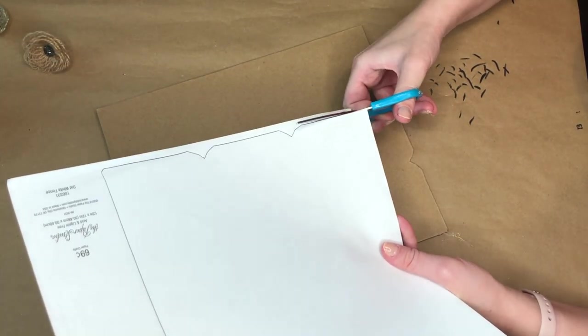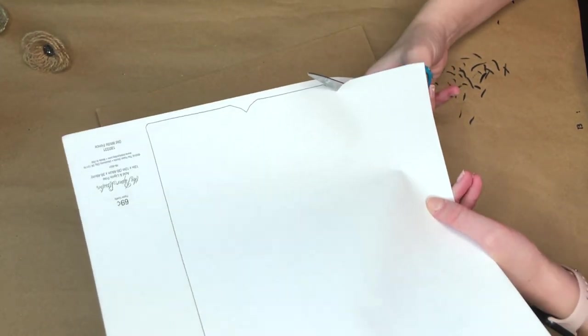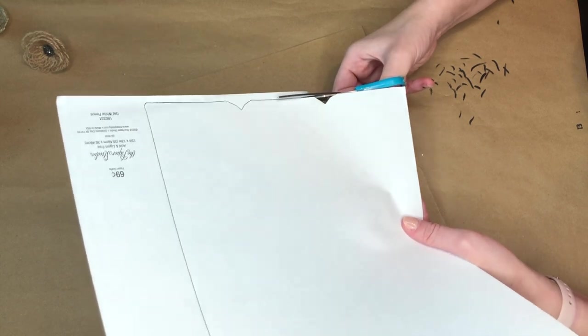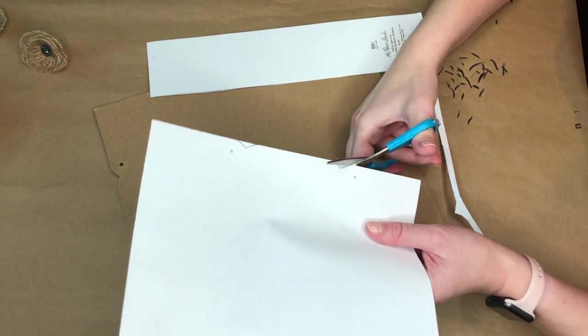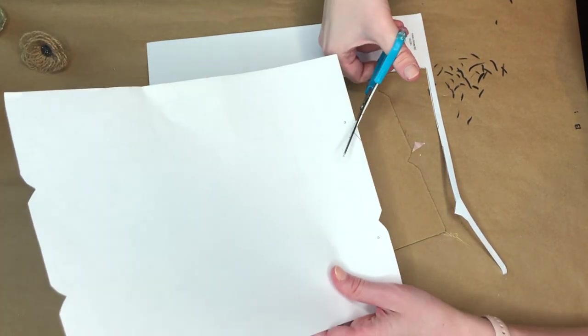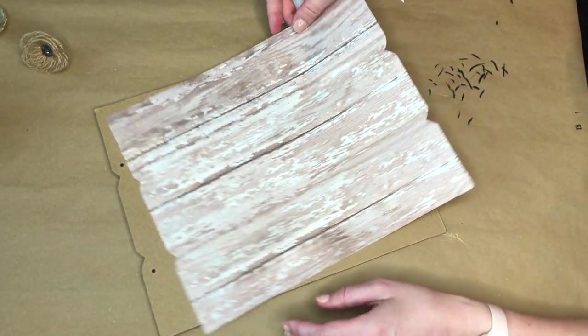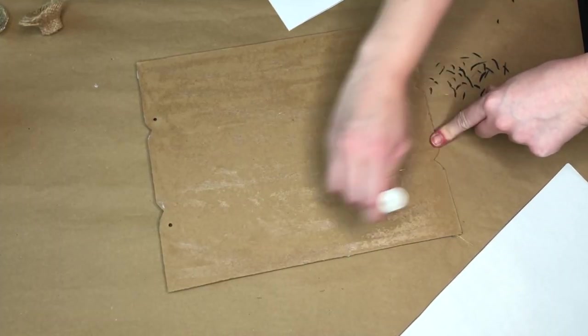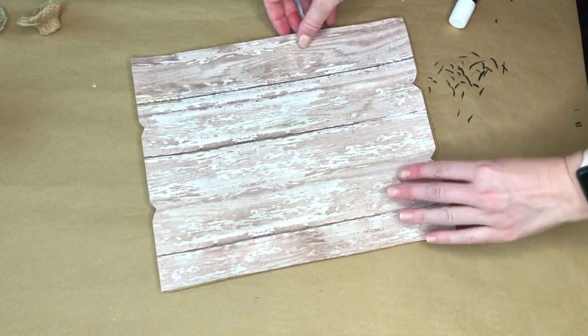But it doesn't really matter because we're going to be covering this sign. And since I already did the first sign using paint, I figured I would do something a little different with this one. So I'm taking some scrapbooking paper that I picked up from Hobby Lobby, and I just traced the sign out onto it. And then I'm going to be adhering this, I think it's supposed to be like a faux shiplap scrapbooking paper. And I just adhered that down with a glue stick.